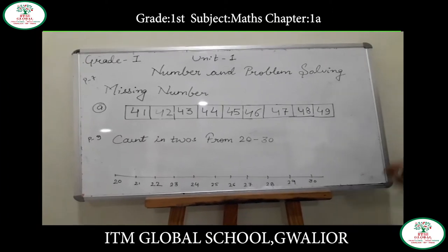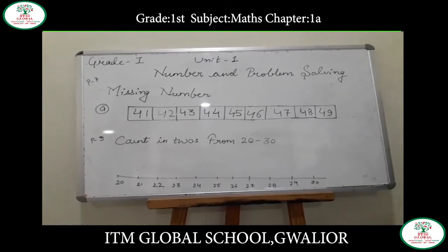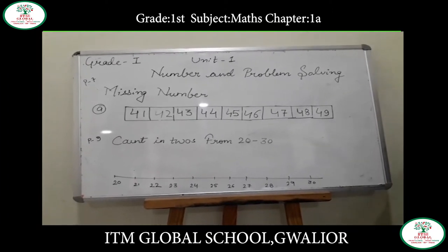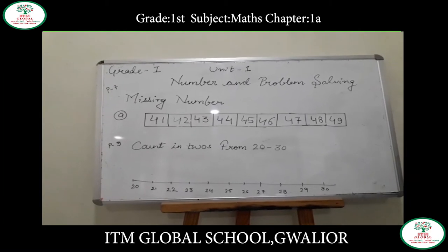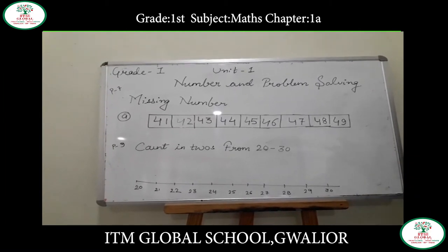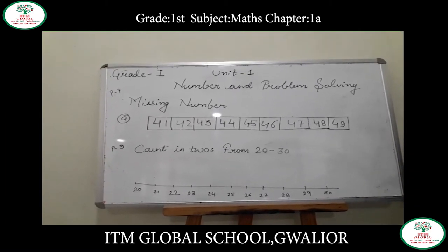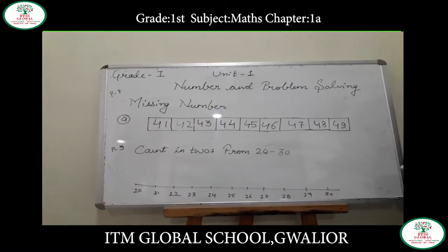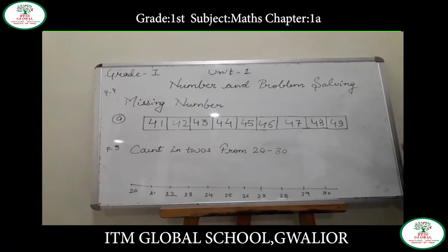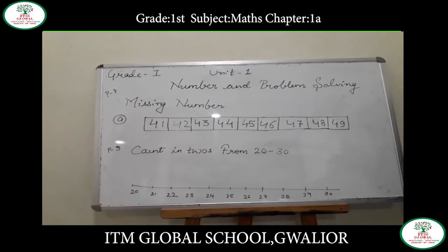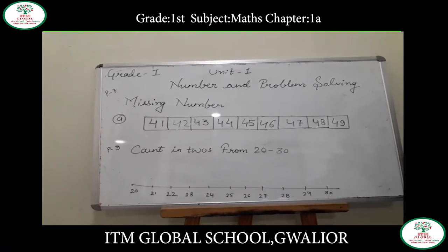The next question in your notebook is: 51, 52, then there is a blank. So you have to count what comes after 52, which will be 53.